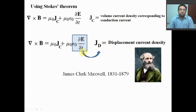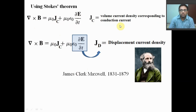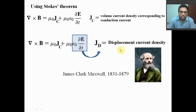If we use Stokes' theorem, then curl B = μ₀ Jc + μ₀ ε₀ ∂E/∂t. Here Jc is the volume current density due to the conduction current, and Jd = ε₀ ∂E/∂t is the displacement current density — and that was introduced by James Clerk Maxwell.